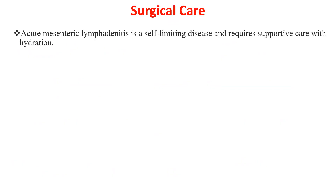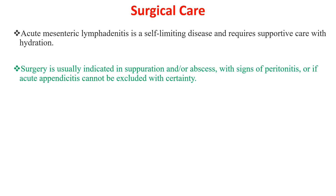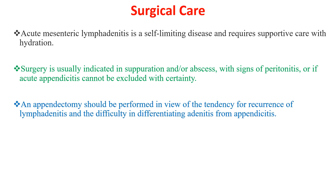Acute mesenteric lymphadenitis is a self-limiting disease and requires supportive care with hydration. Surgery is usually indicated in suppuration or abscess formation with signs of peritonitis, or if acute appendicitis cannot be excluded with certainty. An appendectomy should be considered given the tendency for recurrence of lymphadenitis and the difficulty in differentiating adenitis from appendicitis.